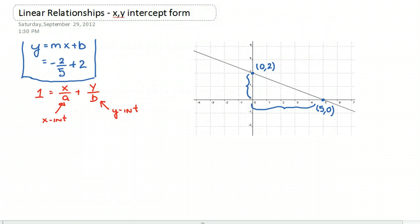So it's a very quick way to get the relationship if you're given the x and y-intercept values. So in this case, the x-intercept is 5, 0.